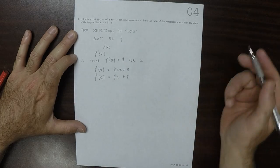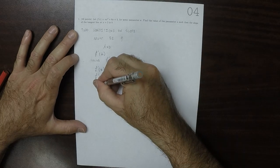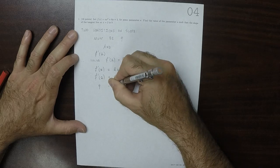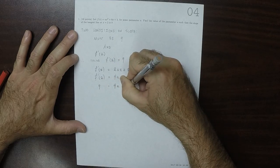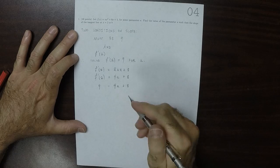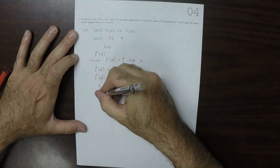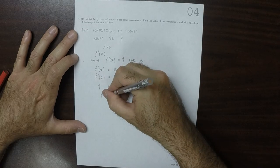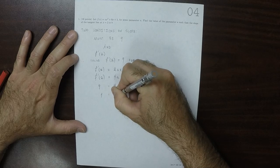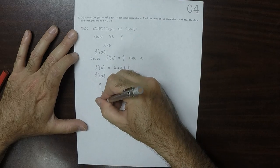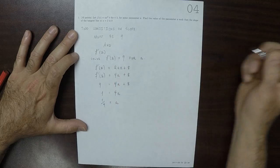We want this to equal 9. So 9 equals 4A plus 8. Moving the 8 to the other side, we get 1 equals 4A, so A equals one fourth.